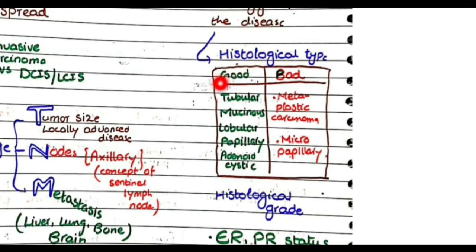The histological types that have a good prognosis are tubular, mucinous, lobular, papillary, and adenoid cystic.